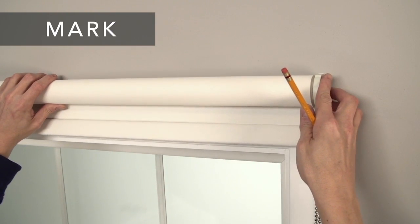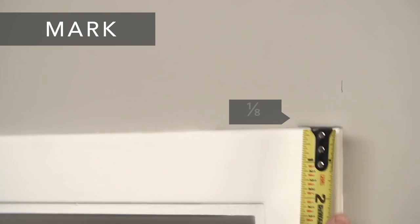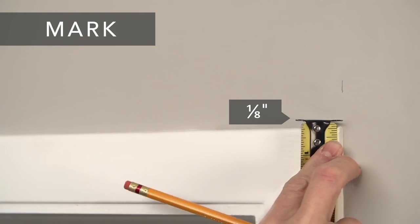First, position the shade and ensure it's level. Mark the ends. Then make a mark one-eighth of an inch up from the top of the window.